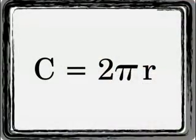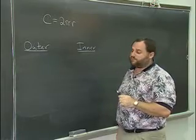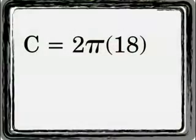We have circumference, which is C equals 2 times pi times the radius. We're going to do the outer circle first where Dave was standing. 2 times pi. The radius of Dave's circle is 18 feet.